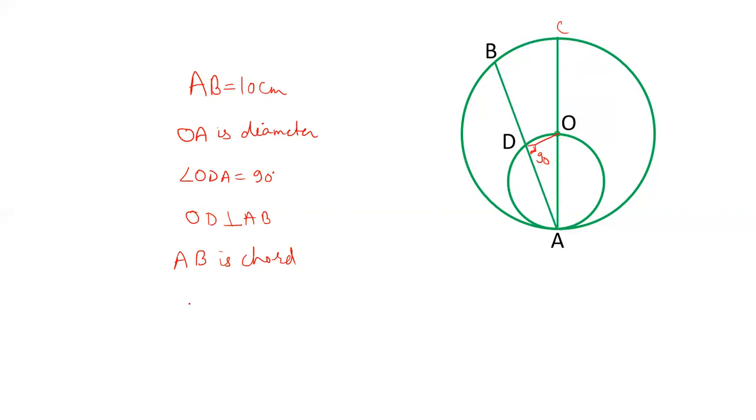Therefore, it will bisect the chord. OD is the bisector of the chord. Perpendicular from the center bisects the chord. And therefore, AD is half of AB.